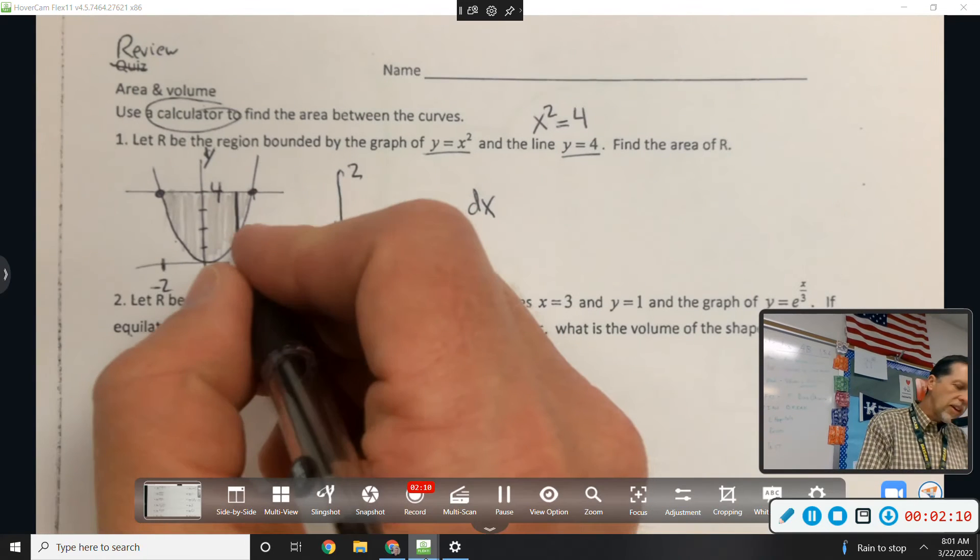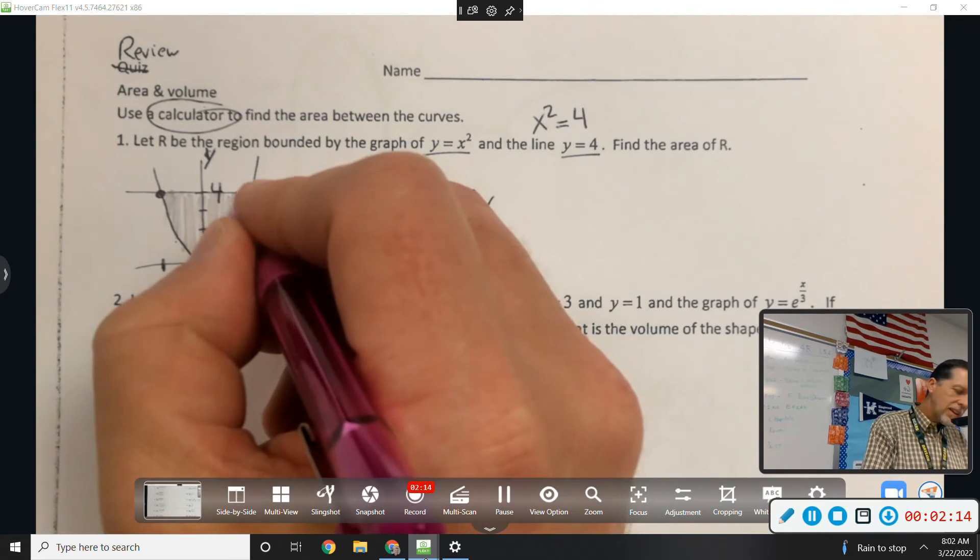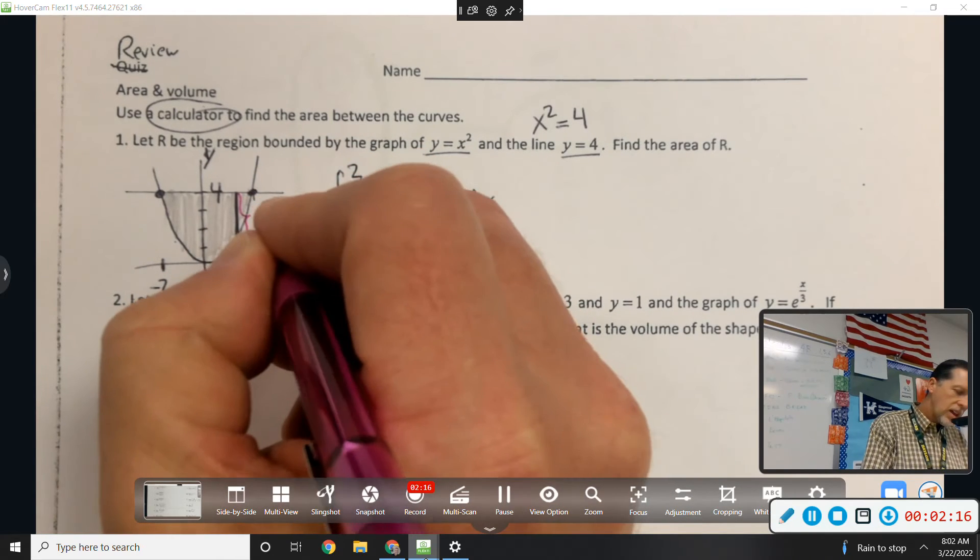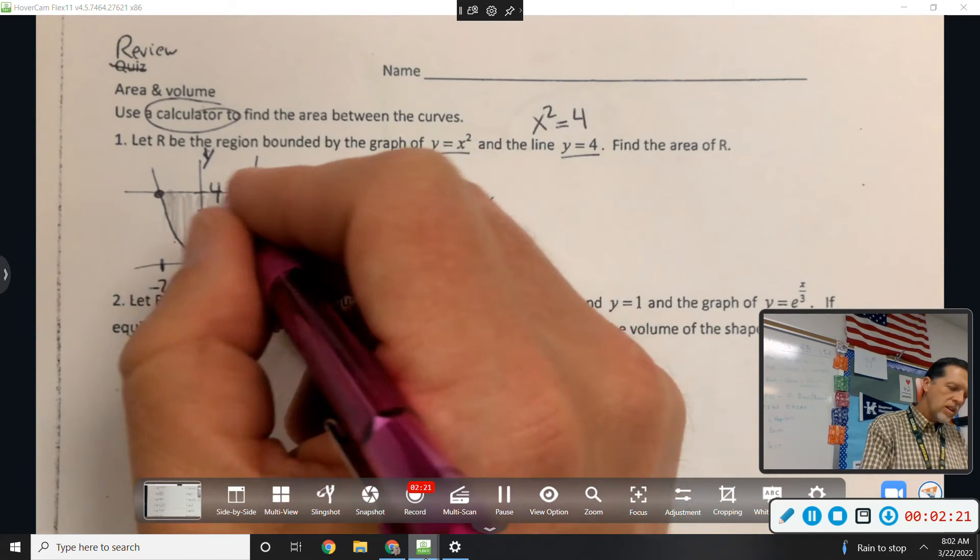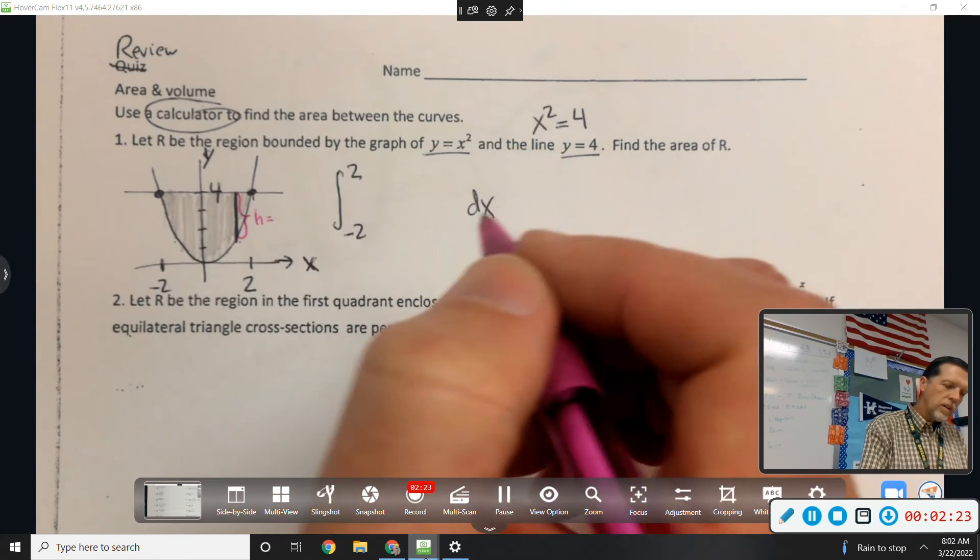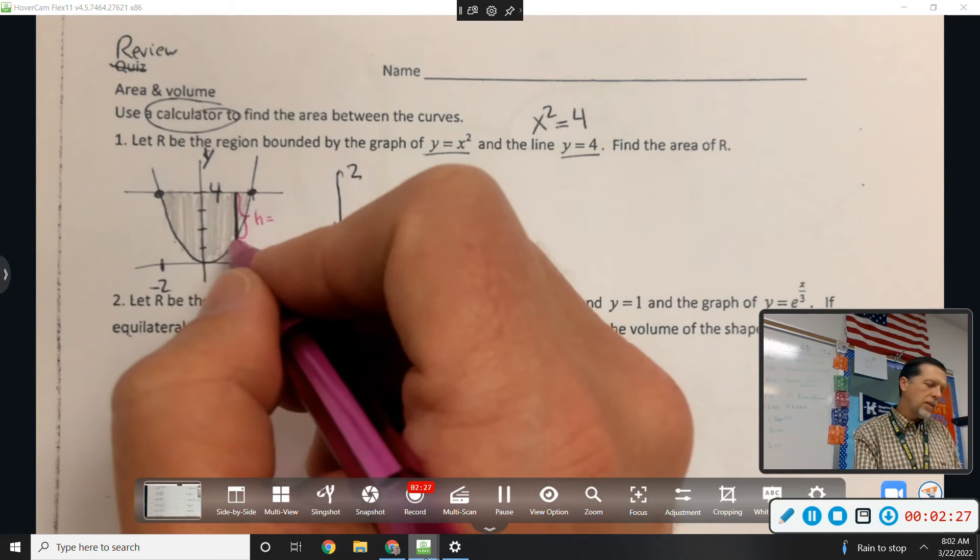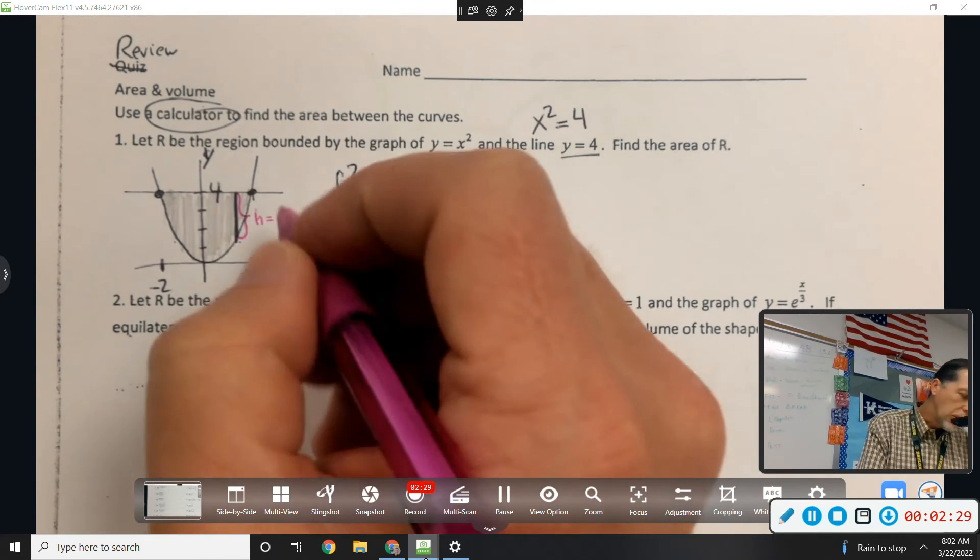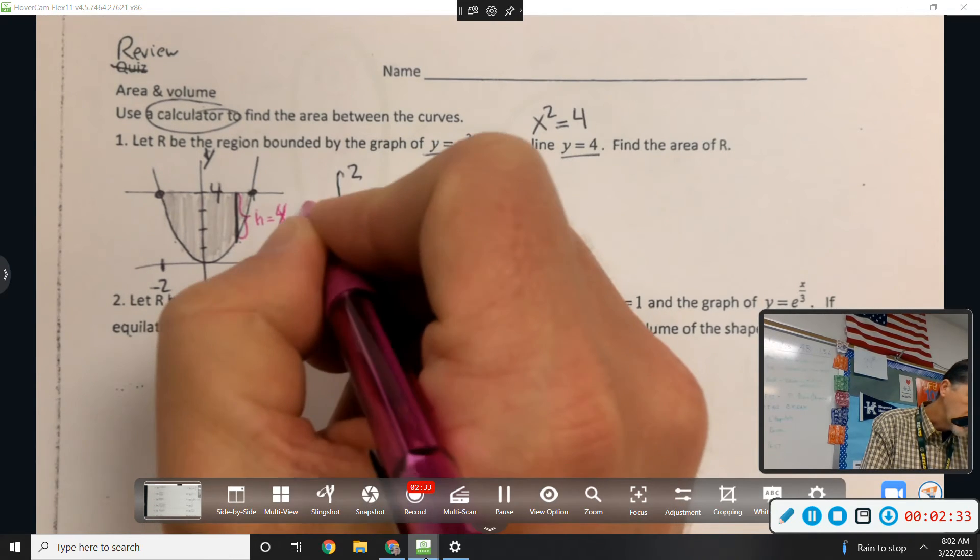So we're going to add up all the rectangles from negative two to two. Their thickness is dx. Their height is the top one minus the bottom one. So this is where if we were in the calculator, we could do y1 minus y2, or we could just say four minus x squared.